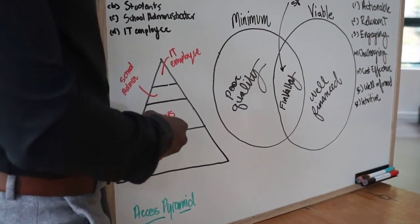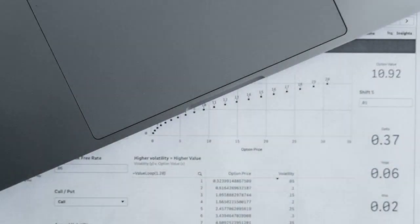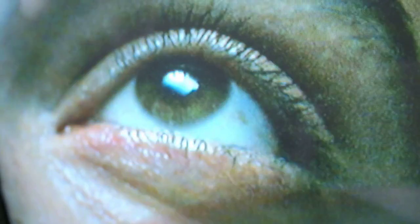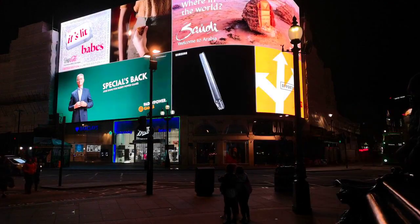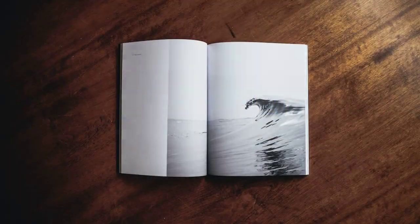Consider the sales funnel. Allocate budget across various stages of the sales funnel. Invest in awareness-building campaigns as well as those that drive conversions. Focus on quality. Quality over quantity applies to digital marketing too. Invest in high-quality content and design that captures attention and drives engagement.